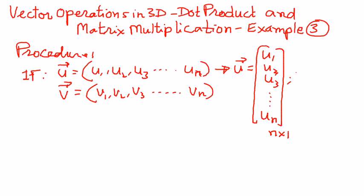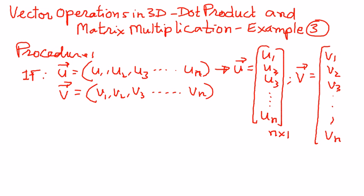Similarly, we can represent vector v as a column vector like this: v1, v2, v3, all the way to vn. And this vector has n rows and one column. So we can represent the vectors as column vectors in that manner.